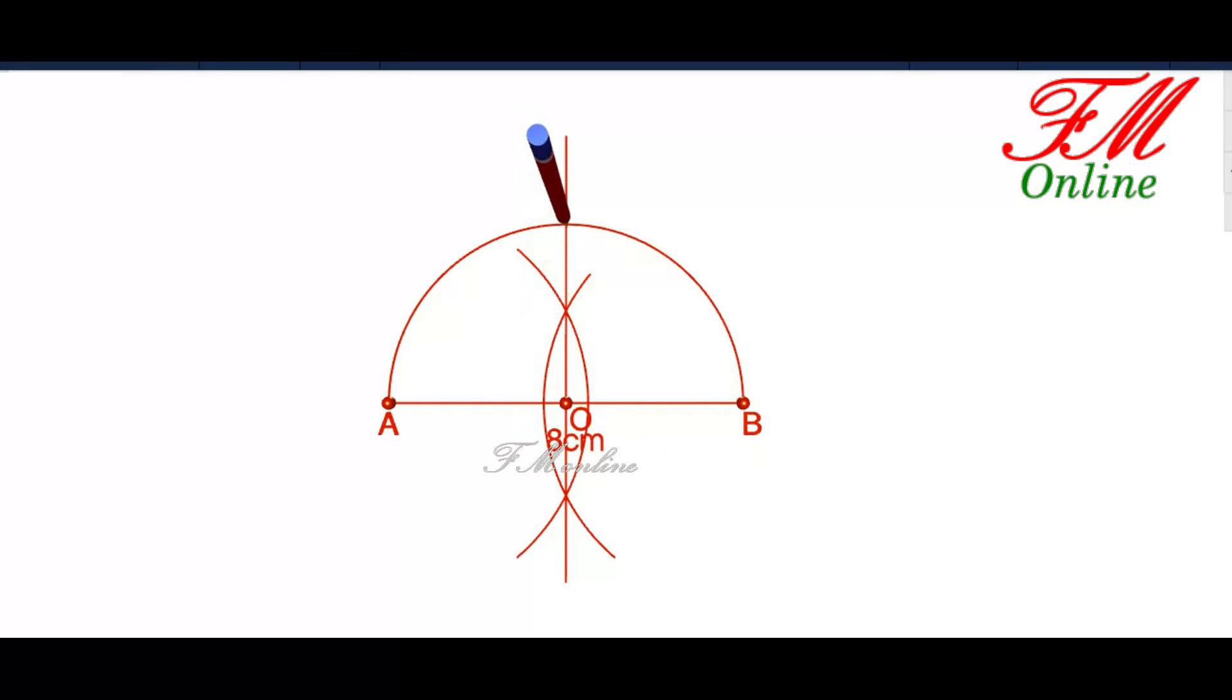Mark C as an intersecting point of semicircle with the bisector line. And join AC and CB to complete the triangle.